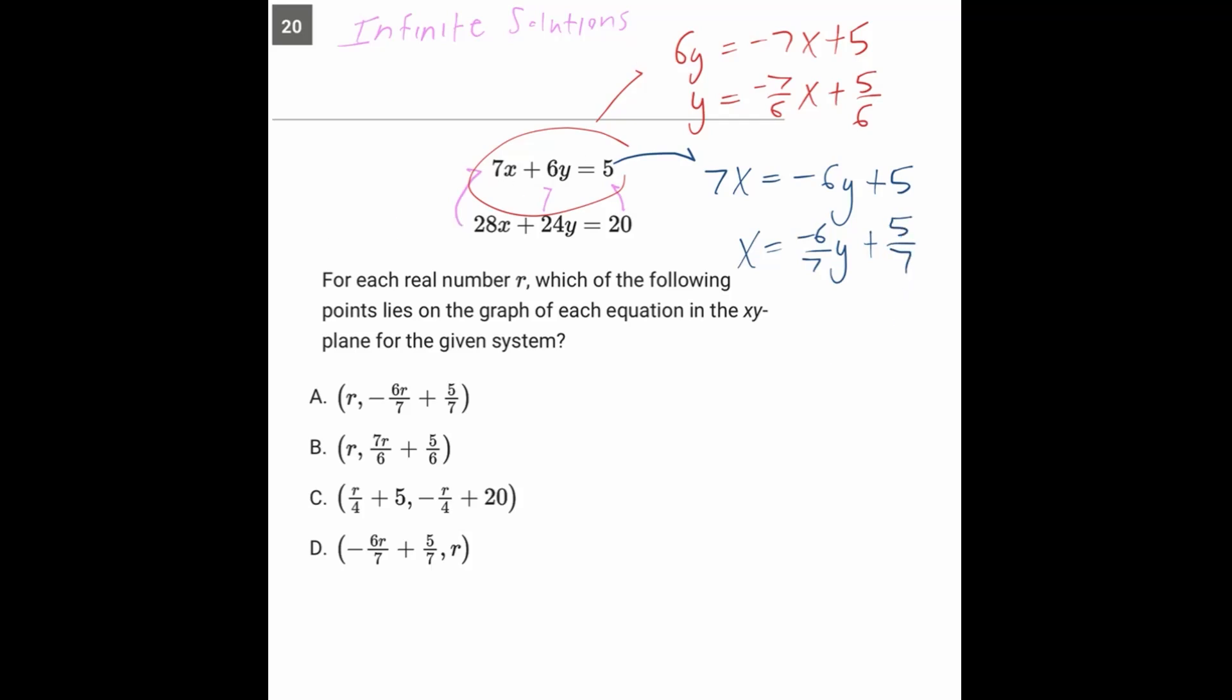So now the big kicker on this question is the verbal statement. This, if we think of it as a verbal statement, says the y value is what you get when you multiply x by negative 7 over 6 and then add 5 over 6 to that. And this statement here is saying the x value is what you get when you multiply y by negative 6 over 7 and then add 5 over 7 to that.